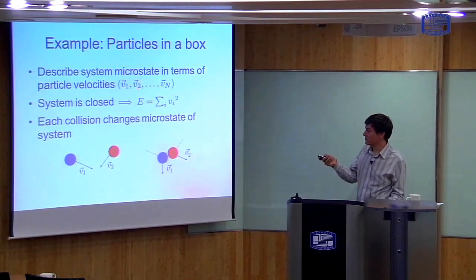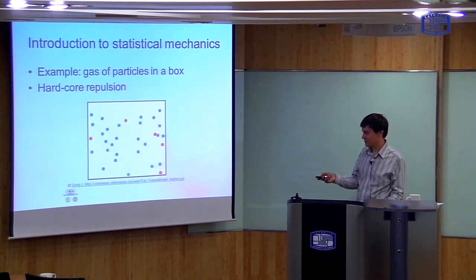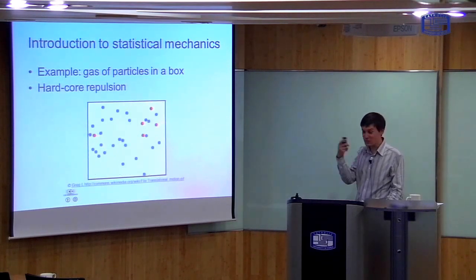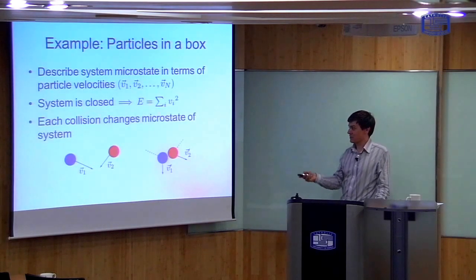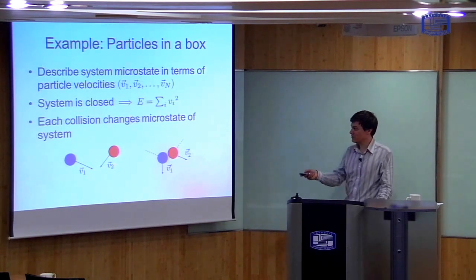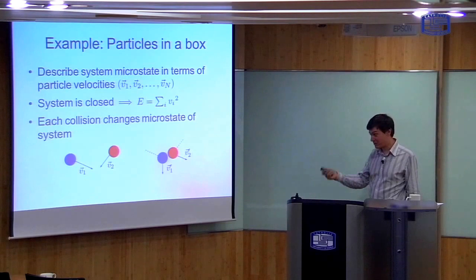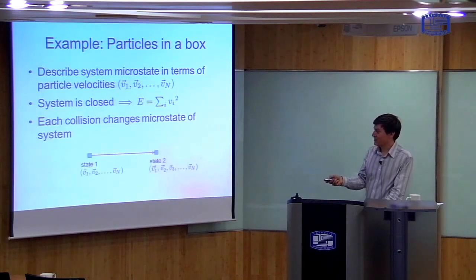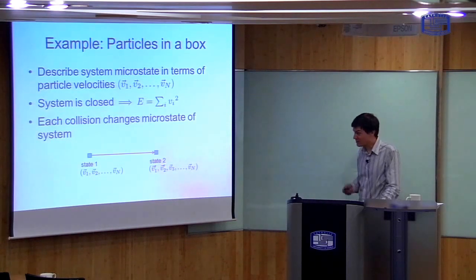I define the microstate in terms of the velocities of the particles, but when two particles collide, they change velocity. This particle is now moving up, but when it collides with another particle, it suddenly starts moving horizontally. So collisions change the microstate of the system. Each collision changes the microstate. For example, I have two particles here with velocities v1 and v2. Initially, after they collide, they have some other velocities v1-prime and v2-prime. So the microstate is changed.